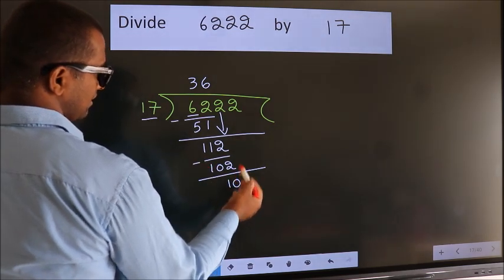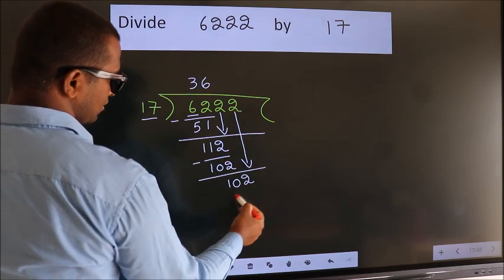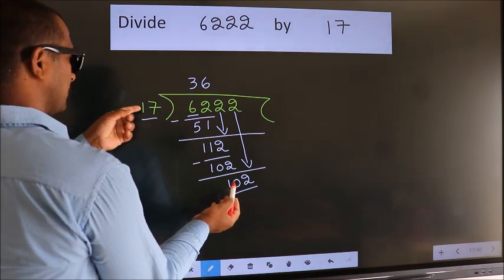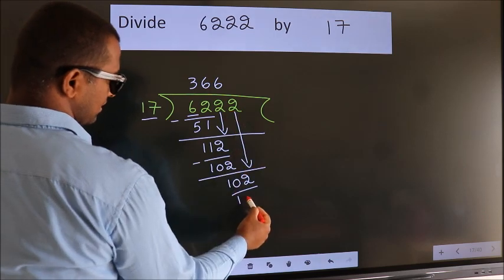After this, bring down the beside number. So 2 down. So 102. When do we get 102 in 17 table? 17 times 6, 102.